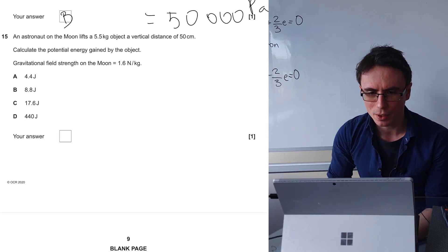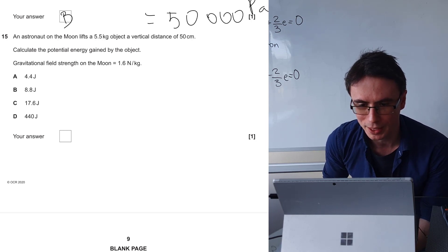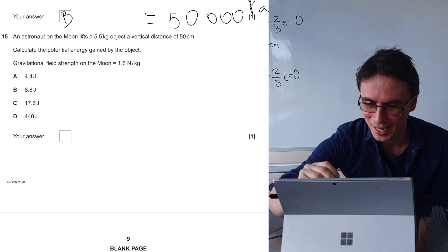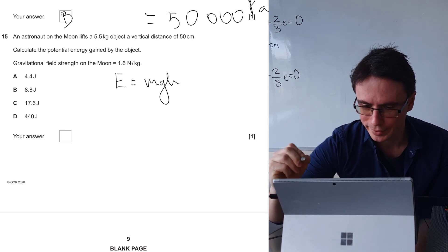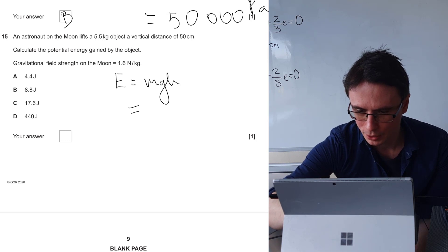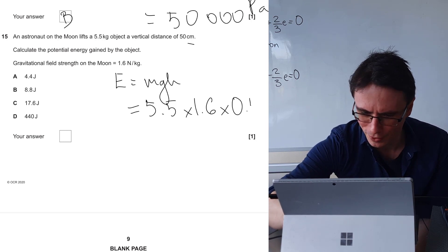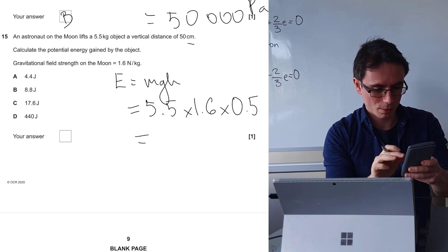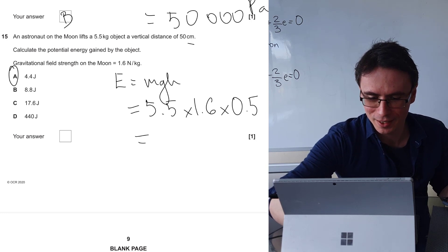Question 15. An astronaut on the moon lifts a 5.5 kg object a vertical distance of 50 centimeters. Calculate the potential energy gained by the object. Gravitational field strength on the moon is 1.6 newtons per kilogram. I'm going to use the fact that E equals mgh. So the object is 5.5 multiplied by 1.6 and then it's going up 50 centimeters, I'm going to convert to meters, so 0.5. 5.5 times 1.6 times 0.5 is 4.4 joules. The correct answer is A.